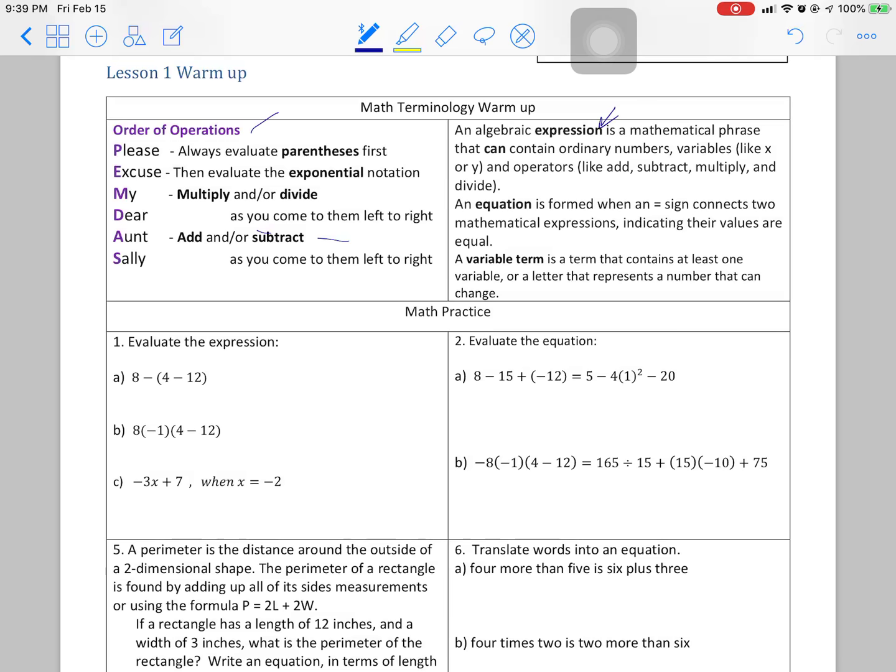An algebraic expression is a mathematical phrase that can contain ordinary numbers, also variables, letters that stand for numbers, and operators. So all those things are coming into play. These are expressions. These are equations because they have the equal sign, which connects two mathematical expressions. Their values are equal.